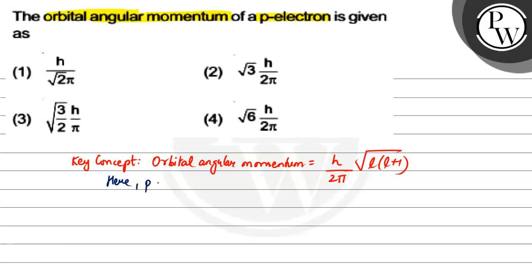Because it is a p electron, l is going to be equal to 1. Therefore, orbital angular momentum will be equal to h by 2 pi times 1 into 1 plus 1.